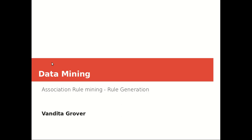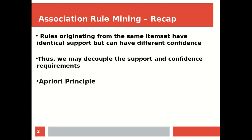Hi everyone. In this topic we are going to talk about rules generation. If you remember in the last lecture, we had talked about how we computed frequent itemsets using the A-priori principle. We also talked about that if you have a frequent itemset out of which you are generating rules, then these itemsets will have identical support, but they may or may not have the same confidence.